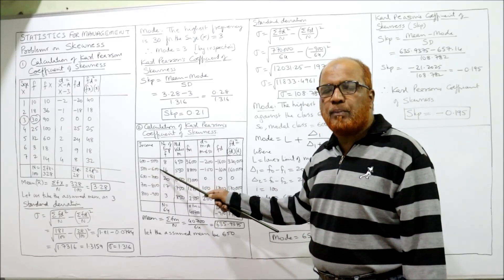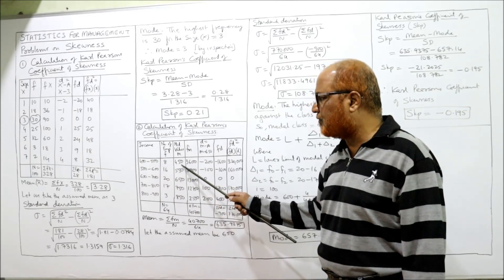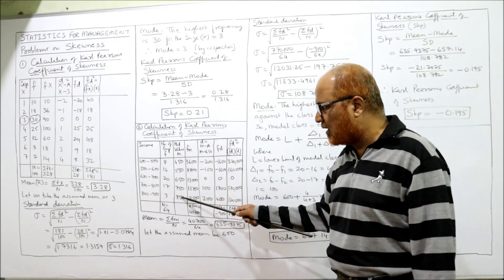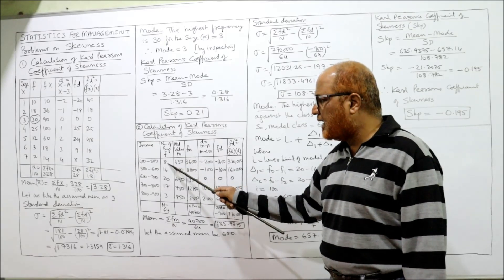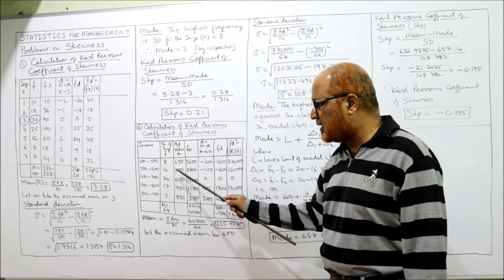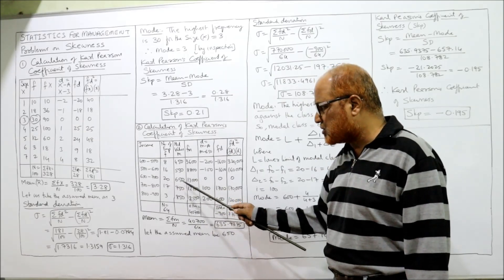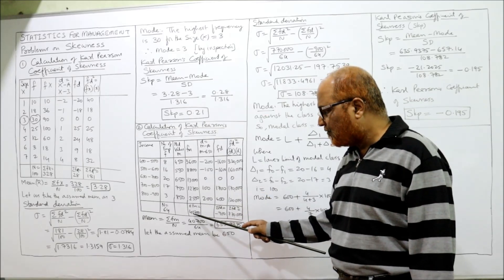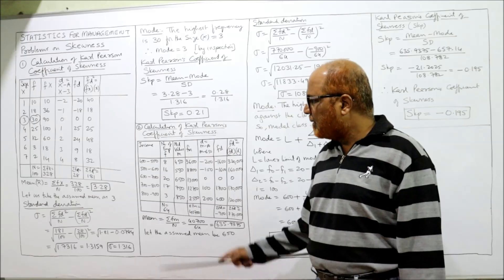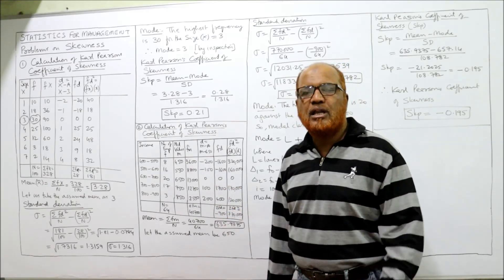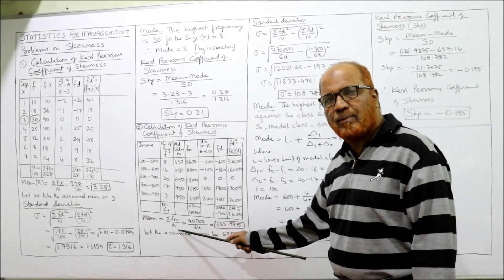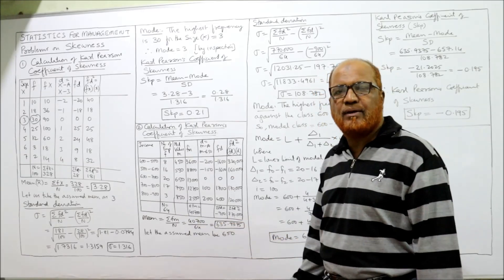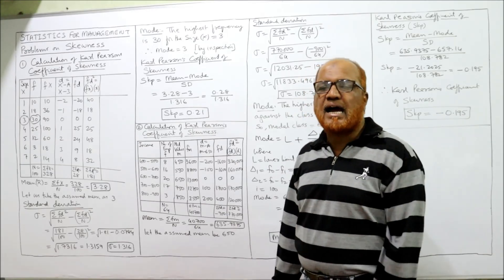For a continuous series, we need mid values to calculate the mean. Mid value = (lower limit + upper limit) / 2. So: 450, 550, 650, 750, 850. Now multiply f × m: 8×450=3600, 16×550=8800, 20×650=13000, 17×750=12750, 3×850=2550. Total Σfm = 40700, total frequency n = 64. Mean = 40700 / 64 = 635.9375.